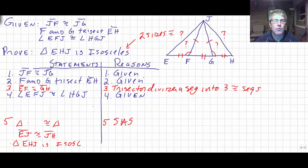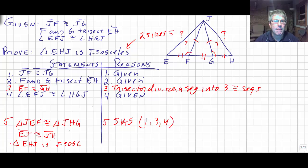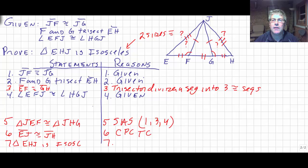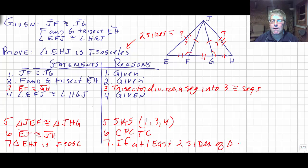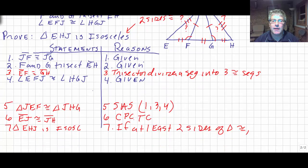So triangle JEF is congruent to triangle JHG — I need to be careful with my correspondence there. Using steps one, three, and four, in step six we know EJ is congruent to JH because corresponding parts of congruent triangles are congruent (CPCTC). Then we know the big triangle EHJ is isosceles, because if at least two sides of a triangle are congruent, it is isosceles.